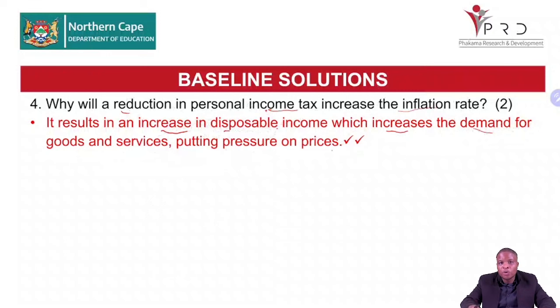So in the short term, producers will not produce more. When they see that there is too much money, they will increase the price of goods and services.